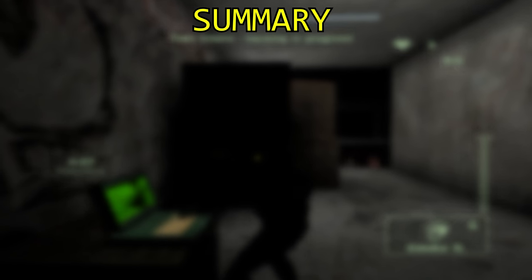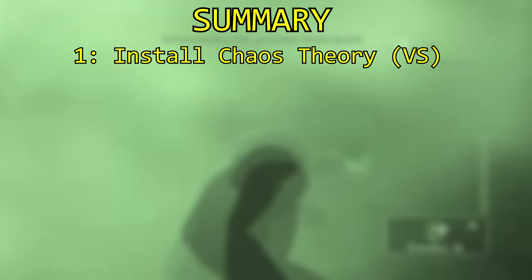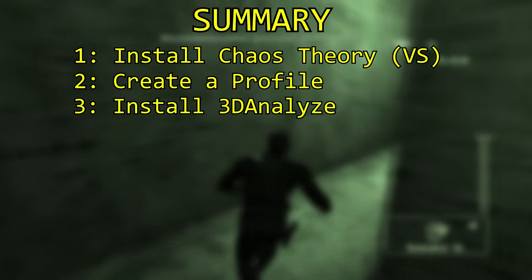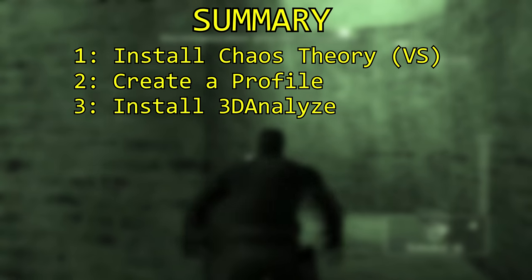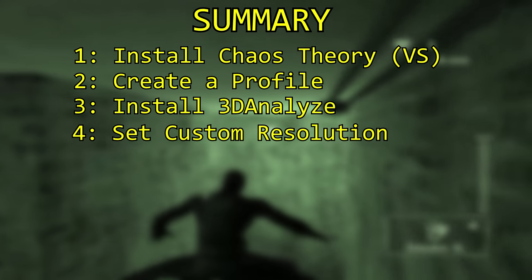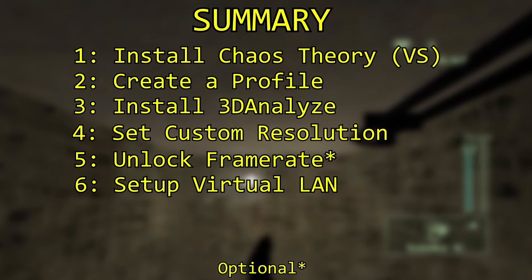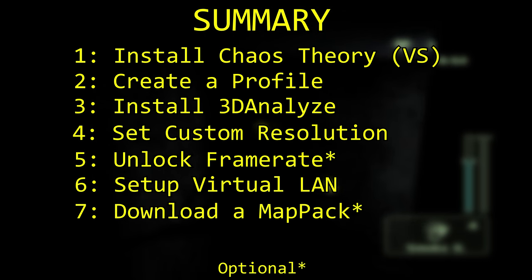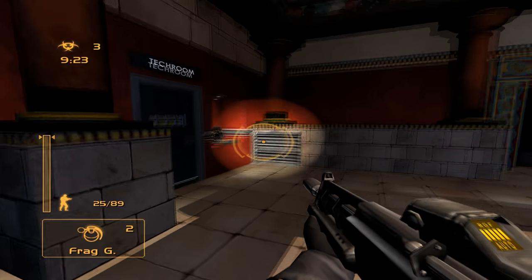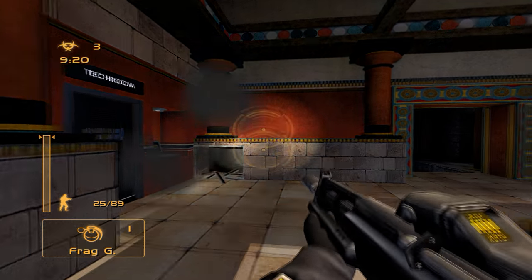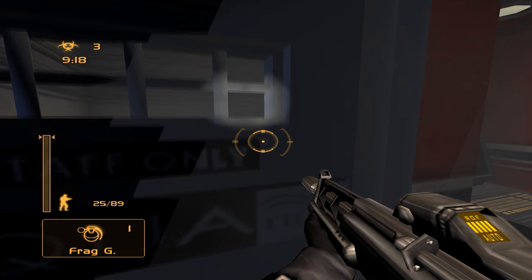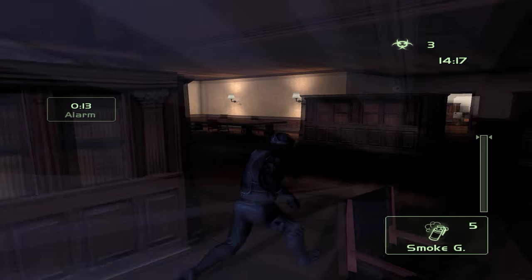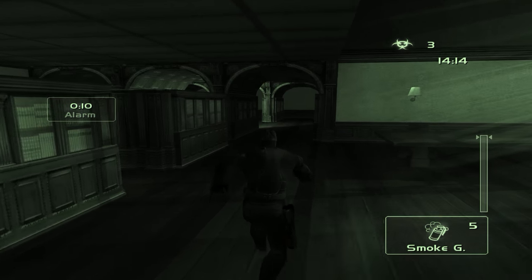To summarize the steps: Step one, install Splinter Cell Chaos Theory. Step two, boot up Versus and create a profile. Step three, download 3D Analyze. Step four, set a custom resolution. Step five, unlock the frame rate. Step six, set up a virtual LAN. And step seven, optionally download a map pack. That should get everything working and allow you to replay this classic multiplayer experience with tolerable visuals and performance. I hope this video was helpful — let me know any suggestions in the comments below, and don't forget to like and subscribe for more videos posted every week.